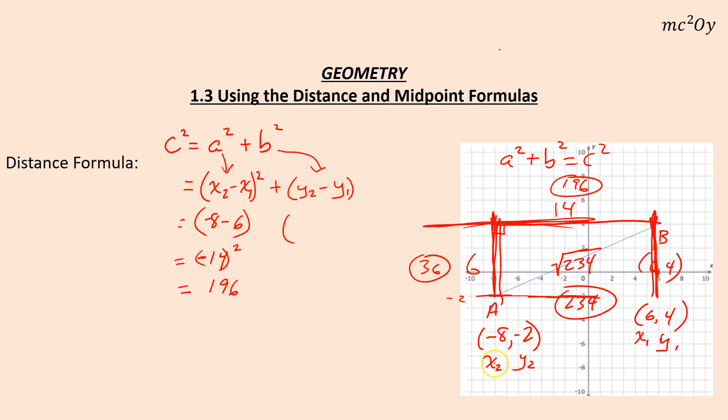So I'm going to say y two minus y one. So I'm going to go from negative two all the way up to four, and that would give me a distance of negative six. And negative six squared happens to be thirty-six. And so we still kind of have that thirty-six and one ninety-six, and then the C squared just kind of carries down. Okay, well, when we're dealing with the distance formula, you're actually calling that C squared, we change it to what's called D for distance.